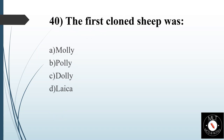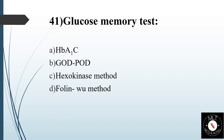Fortieth question. The first cloned sheep was. Option A: Molly. Option B: Polly. Option C: Dolly. Option D: Laika. Answer is Option C: Dolly.